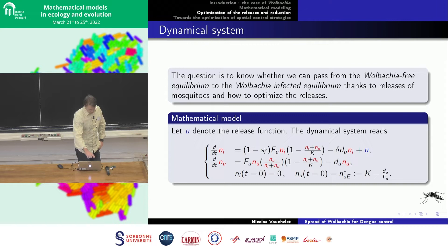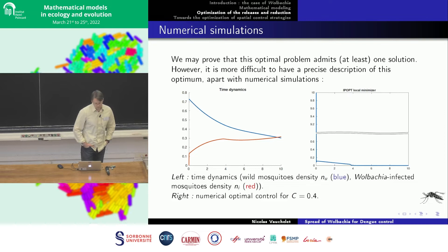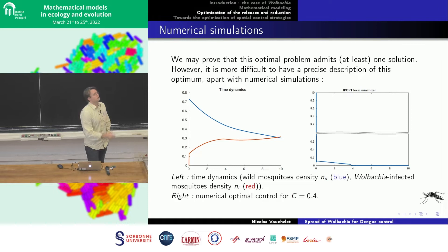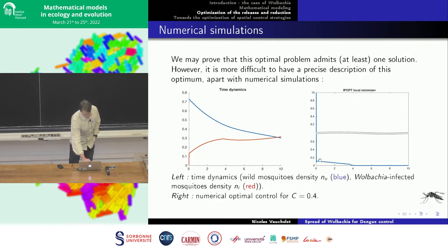Numerically, the result shows N_i in red and N_u in blue, and the optimal release function u. It seems that you do all the release at the very beginning — there is a big impulse at the start and then almost nothing. It looks like a bang-bang solution. Compared to the scale of 10, the remaining release is less than 0.1 — less than 1% of the maximum. It seems close to bang-bang, but can we prove it?